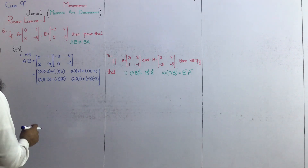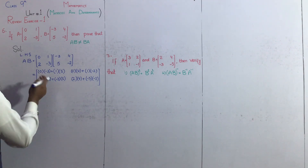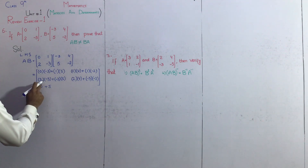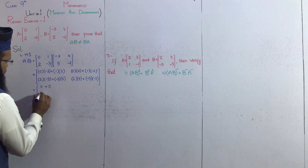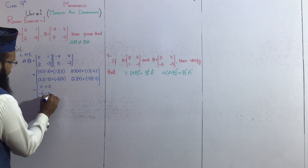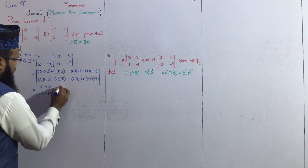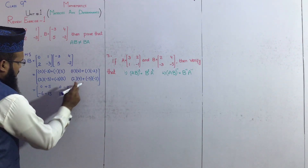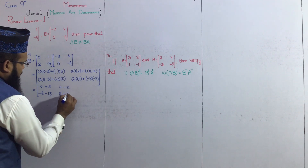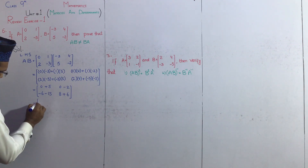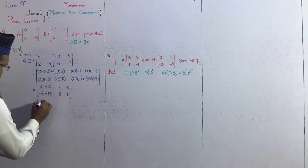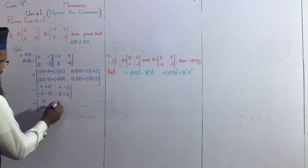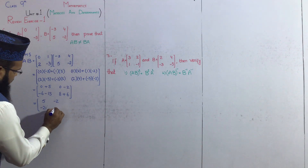Ab in dono matrix ko multiply kar diya. Kya banega hamare paas? 0 times minus 3 = 0, plus 5: result 5. Minus 6 minus 15 = minus 21. 0 times 4 = 0, plus minus 2: result minus 2. 2 times 4 = 8, plus minus 3 times minus 2 = plus 6: result 14. So AB = [[5, minus 2], [minus 21, 14]].